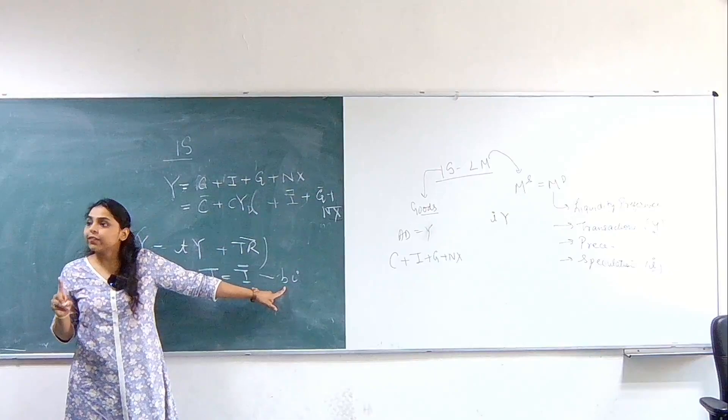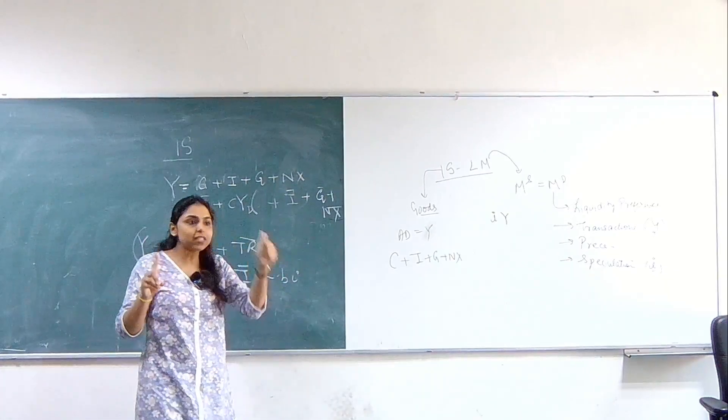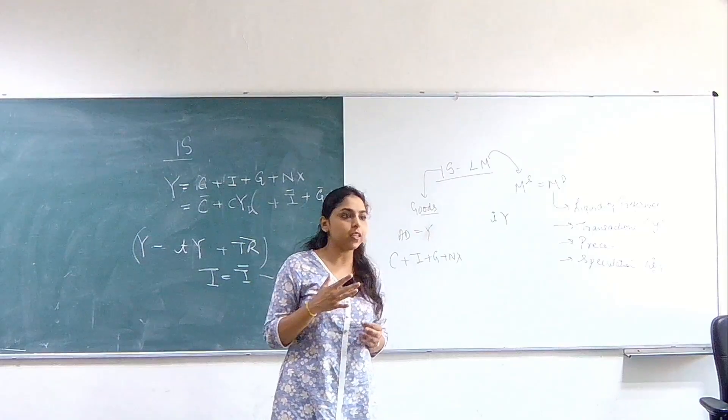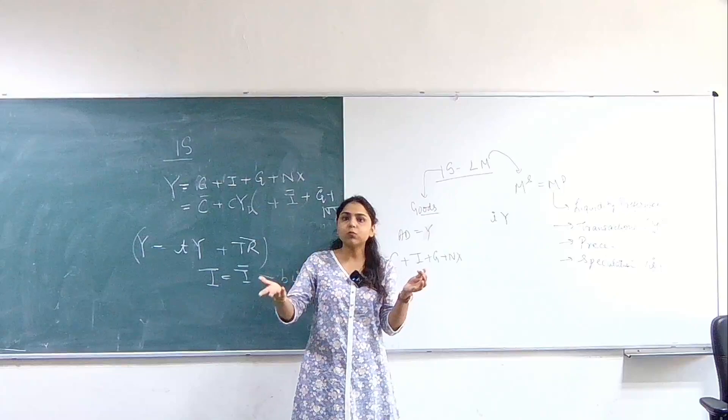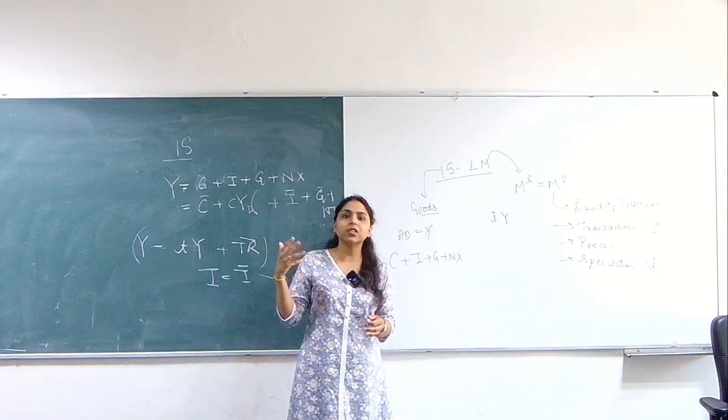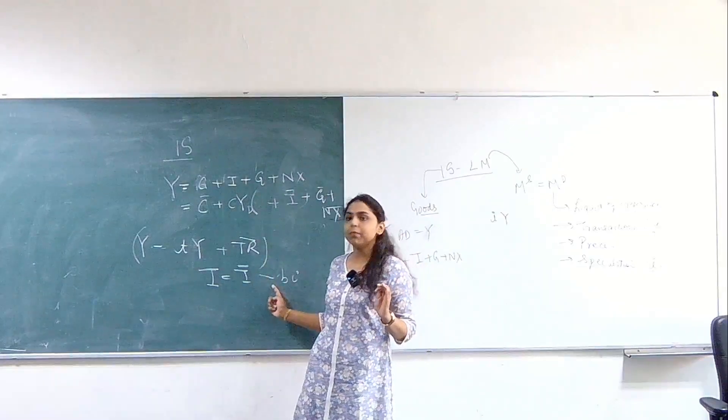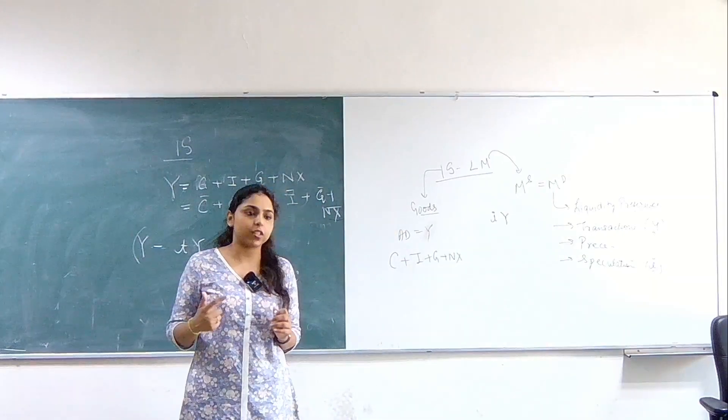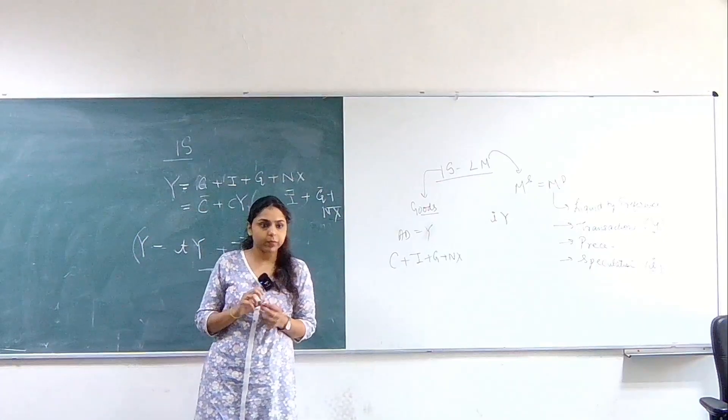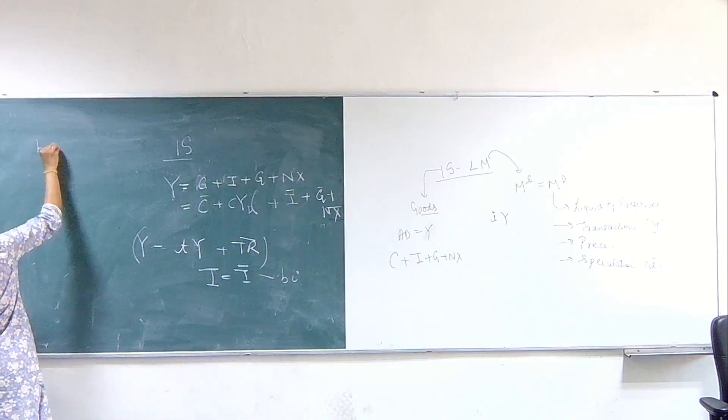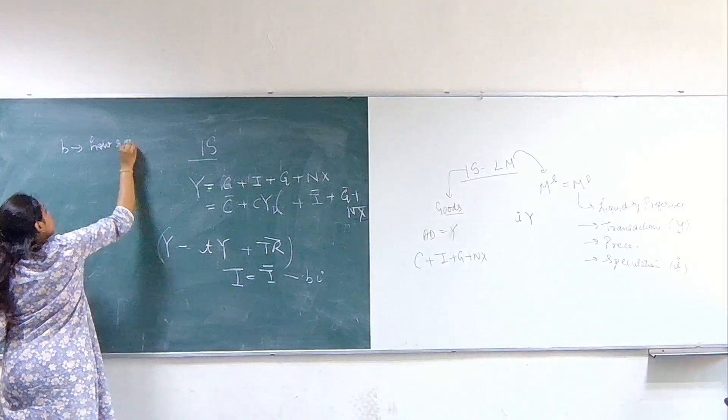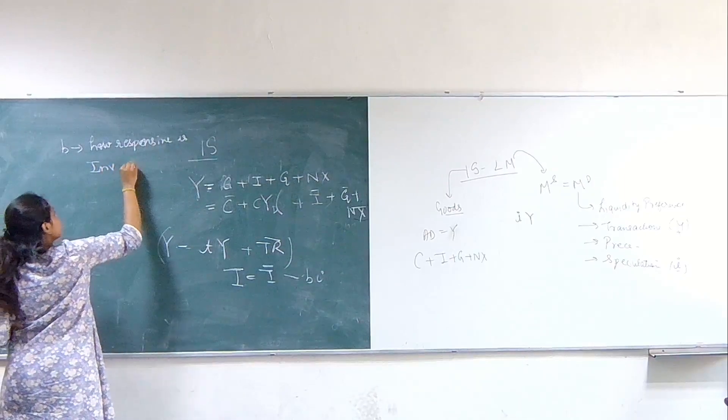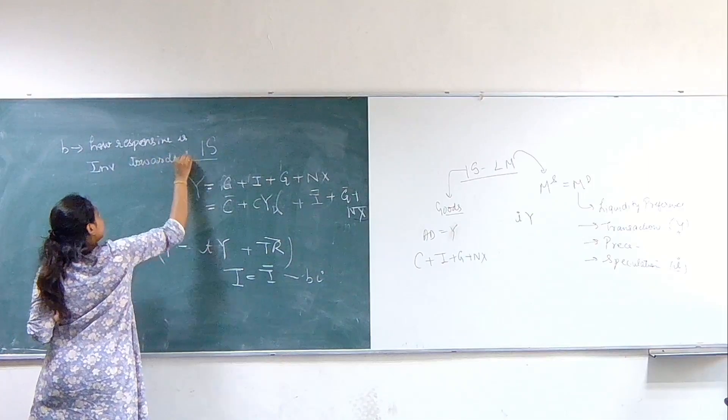This B gives me the responsiveness of investment towards the interest rates. If you had done your demand analysis previously, if the price increases, demand is going to decrease. But how much? What is the responsiveness? Analogically, that concept and this concept are same. So B will tell you how responsive is your investment towards interest rates. So let me write it here because these points will be used later on. B tells me how responsive is investment towards interest rates.